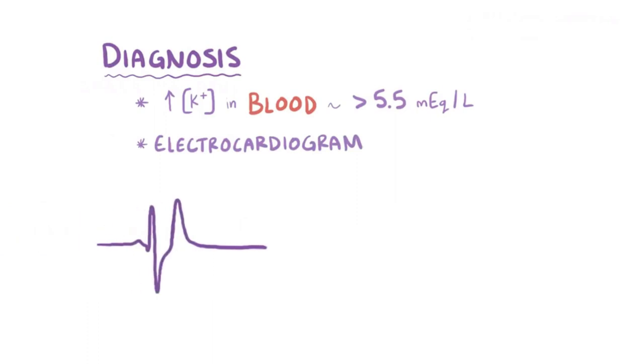Hyperkalemia is diagnosed based on the presence of elevated potassium levels in the blood, generally over 5.5 milliequivalents per liter. It's also important to get an electrocardiogram, which typically shows tall, peaked T waves with a narrow base best seen in the precordial leads V1 through V6, as well as a shortened QT interval and ST segment depression.